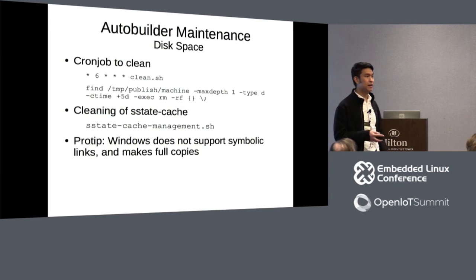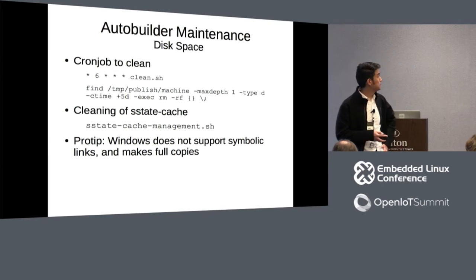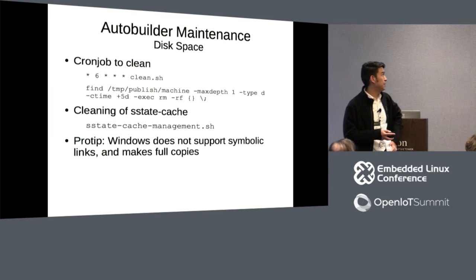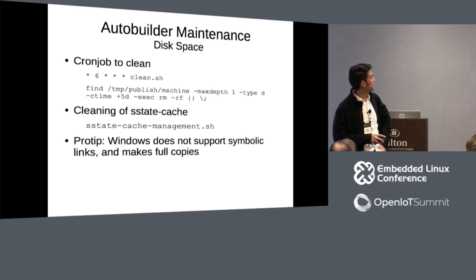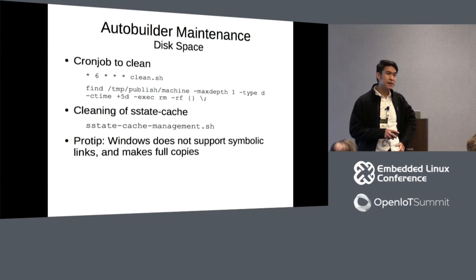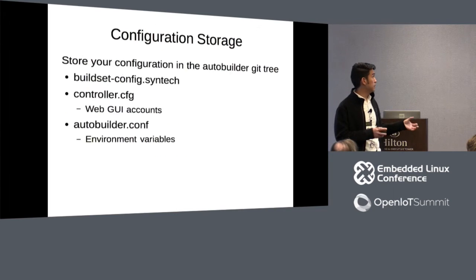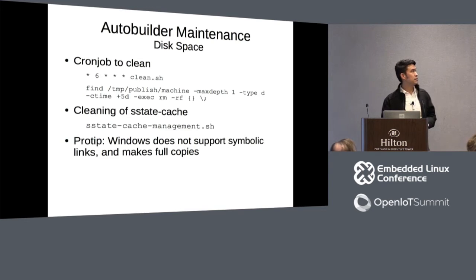When running an AutoBuilder instance, disk space gets chewed up as you build nightly. I created a cron job to clean it — it goes to the publish artifacts directory, looks for anything older than five days, and executes rm -rf. Don't run this as root — bad idea. You can also run the sstate-cache management script available within OE Core, which reads your sstate-cache directory and cleans out the pre-mirror directory if required.